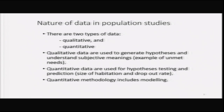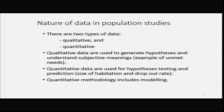There are two types of data in population studies: qualitative data and quantitative data. Qualitative data come from ethnographic studies or surveys when variables are qualitative. They are used to generate hypotheses and understand subjective meanings in Max Weber's sense — for example, unmet needs. Quantitative data are used for hypothesis testing and prediction, such as size of habitation or dropout rate.